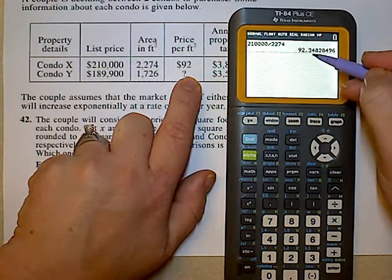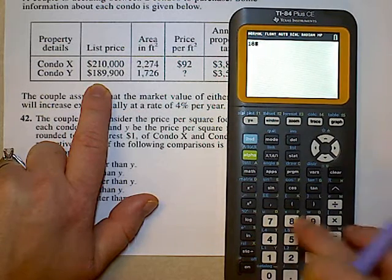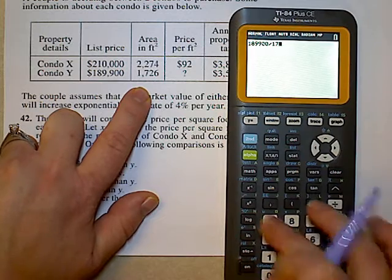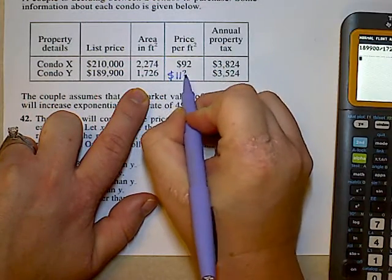And that gives us about $92 per square feet. So let's do the same with the next, $189,900, divided by 1,726, and this gives us approximately $110.